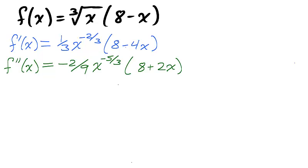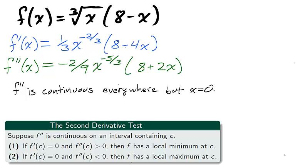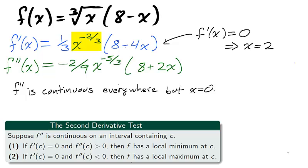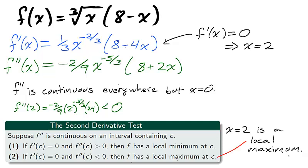Returning to our previous example, we cannot use the second derivative test on the point x = 0, as that is the only point of discontinuity for the second derivative. The first derivative is zero exactly at x = 2. Don't be fooled into thinking x = 0 is a root of f' — x has a negative exponent, so when x = 0 the function is undefined. Notice that the second derivative is negative when x = 2, so by the second derivative test, x = 2 is a local maximum of the function f.